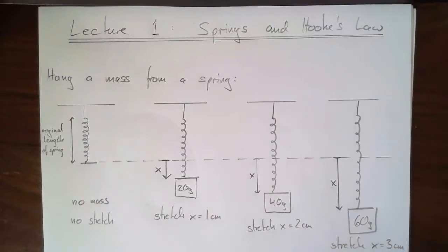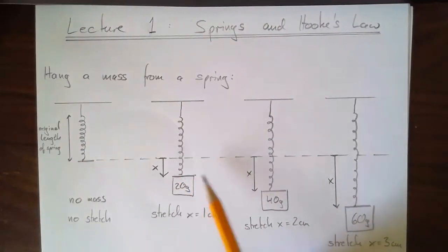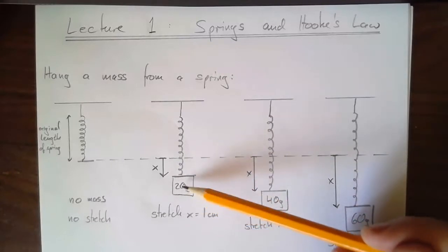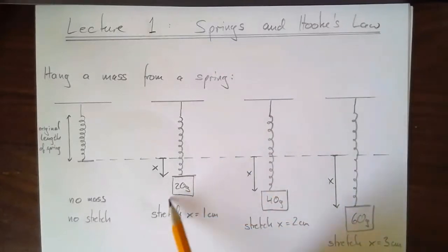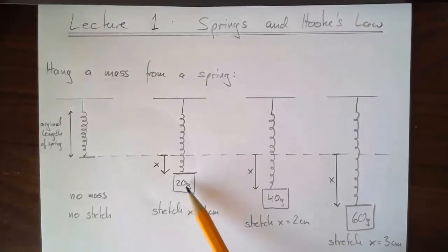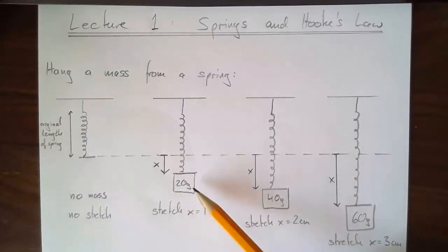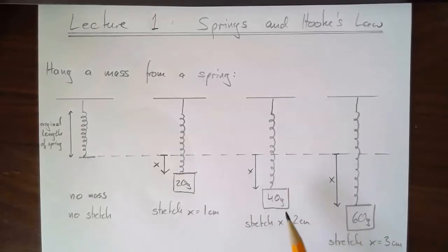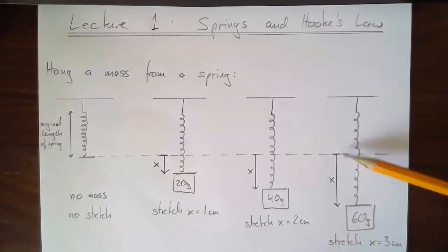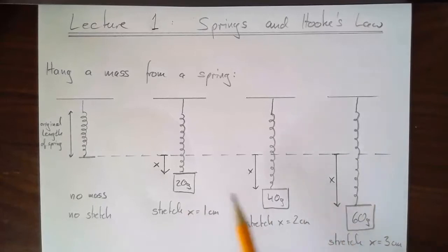In a real lab I'd do this experiment with different masses, each time letting the spring hang perfectly still. What I find is that the weight hanging from the spring is proportional to the stretch length. If I hang twice the mass — say from 20 grams to 40 grams — the spring stretches twice as far, and 60 grams stretches it three times as far. Of course those exact values I made up; a different spring would have different values.